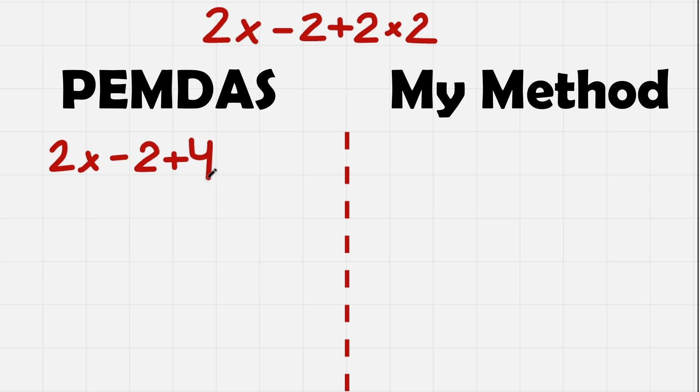So what now? We have subtraction, addition. They have the same priorities so we work from left to right. So okay, 2x minus 2.